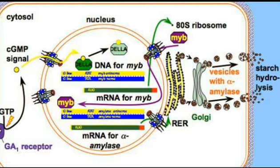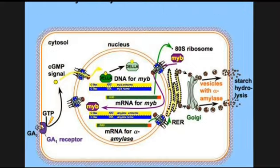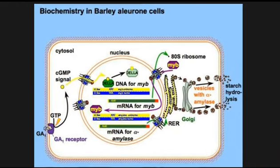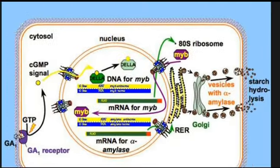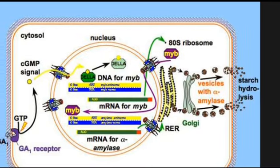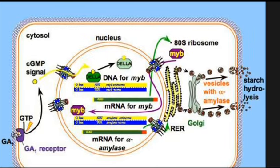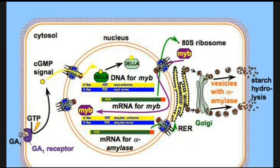The secretory pathway requires gibberellic acid stimulation of the calcium-calmodulin dependent pathway. This is the biochemistry inside the barley aleurone layer. From here the germinating seed gets its energy — glucose is produced, alpha-amylase hydrolyzes the starch and forms glucose, which provides energy and allows the embryo to grow. Thank you.